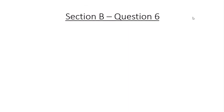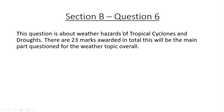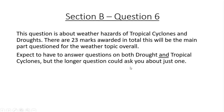Moving on to the second part of this topic, Section B, which is worth far more marks — 23 marks available. This is about weather hazards, and the two main hazards we look at are tropical cyclones and droughts. You'll have to answer questions on both, but it's likely that the eight-mark assess or evaluate question will be about just one, possibly asking you to compare two places.